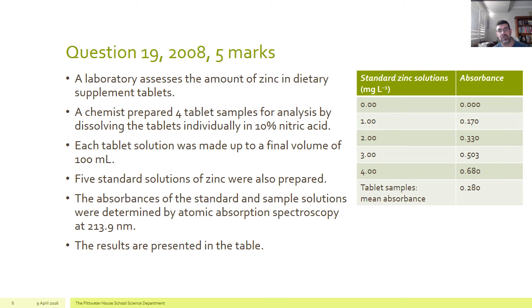So these are the sorts of questions that you're likely to get around AAS. So this is a question from 2008, a five mark question, and it's basically a five mark question because it's a big question that asks for the drawing of a graph and also extrapolation of that graph. So you can see that you've got some values in this table that are going to be your standards.